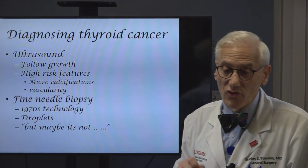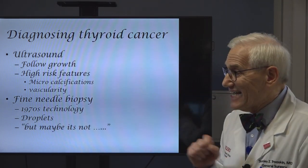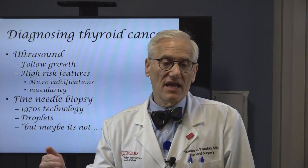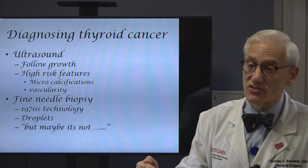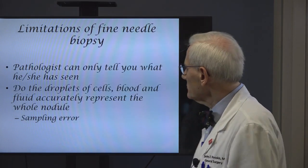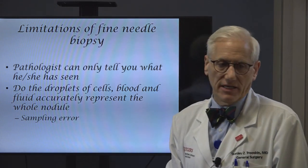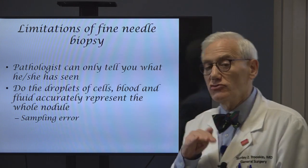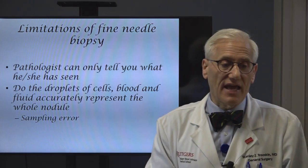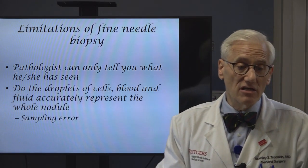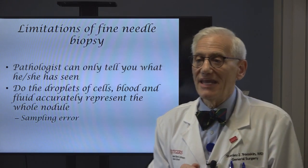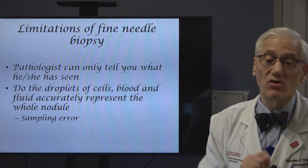Fine needle biopsy is a technology that was developed in the 1970s. You put the needle in the nodule, get out little droplets that look like blood, and there are cells and fluid in it, and then the pathologist can give you a diagnosis. With a fine needle biopsy, every result you get has a 'but' next to it. The pathologist will say, 'I think it's this, but maybe it's not.' The pathologist can only tell you what they're looking at presently — they can't tell you what they haven't seen yet. It all comes down to whether those droplets the pathologist is looking at accurately represent the whole nodule. This is called sampling error — the needle didn't sample the cancer, so it's telling you falsely that it's benign.